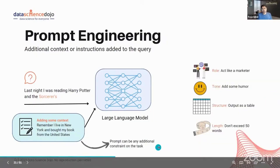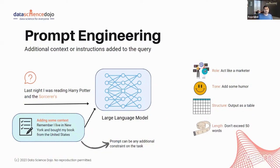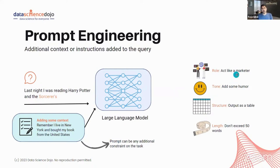So what is a prompt? A prompt is any additional context or instructions added to the query. Think about this — when we say 'act like a marketer,' a large language model has data labeled as marketing brochures or campaigns, and it tweaks the probability of the next word according to the terminology a marketer would use.